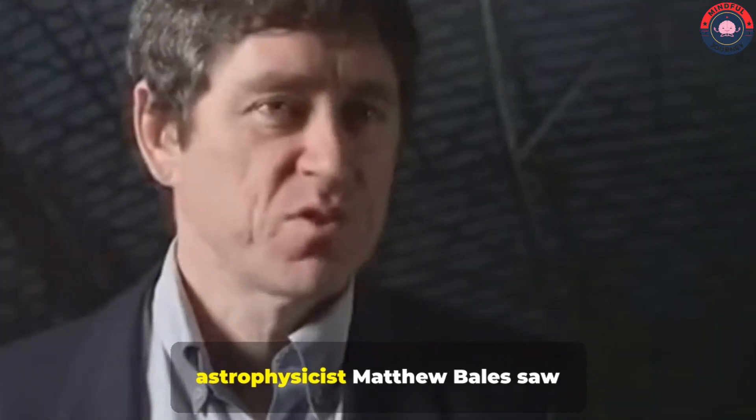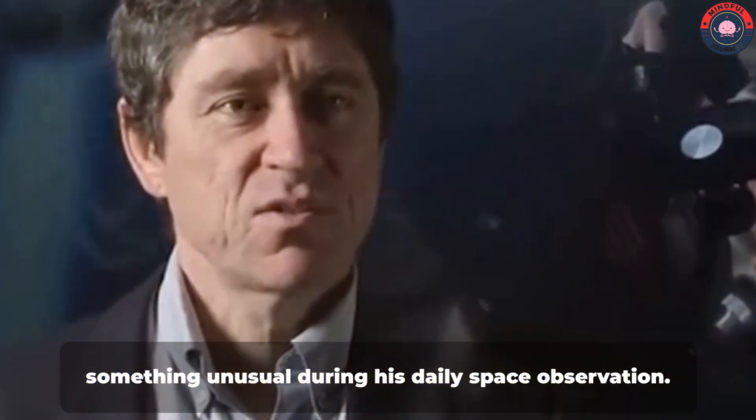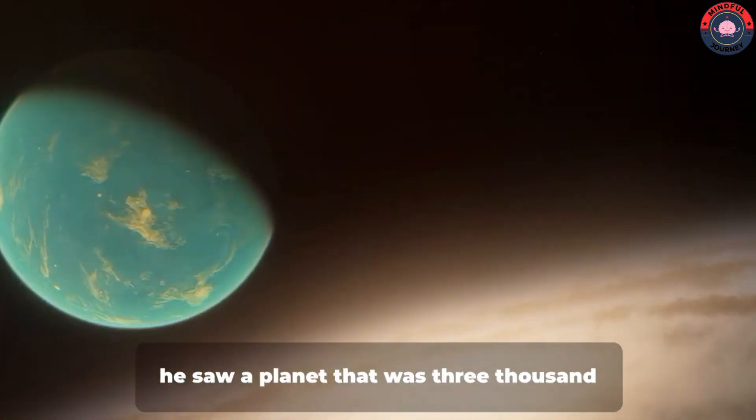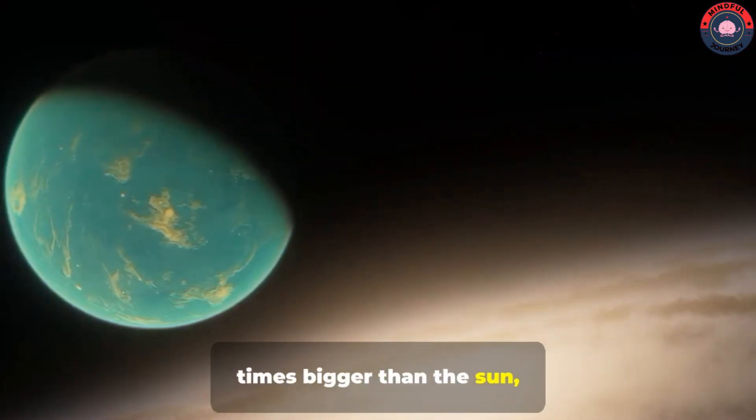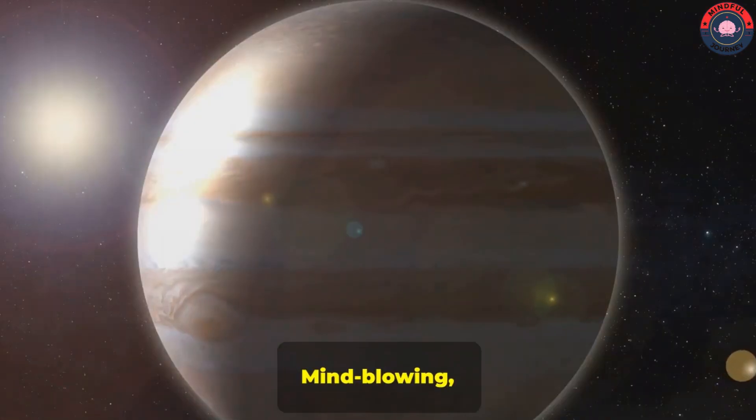In 2009, astrophysicist Matthew Bales saw something unusual during his daily space observation. Suddenly, he saw a planet that was 3,000 times bigger than the sun, but was still revolving around its sun. Mind-blowing, right?